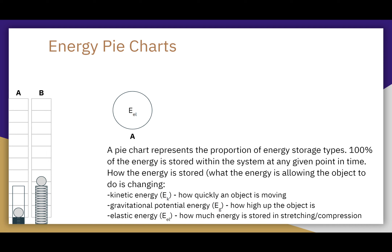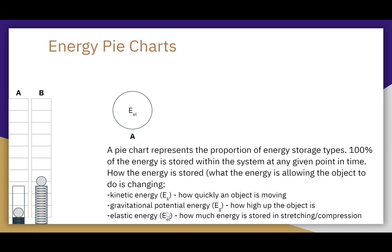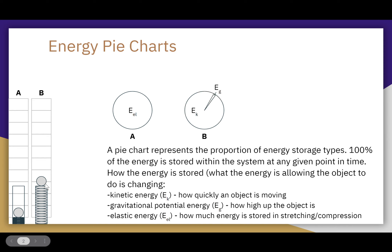At point B, that is the instant the ball leaves the launcher. At that point, the spring has decompressed and is in its relaxed state, so there's no more elastic energy. The ball is a little bit higher up, so we have some gravitational potential energy. But most of the energy is accounted for in motion — the instant the ball leaves the launcher it is moving really fast upwards. That's why in the energy pie chart, almost all of it is EK, kinetic energy, and just a little bit is EG.